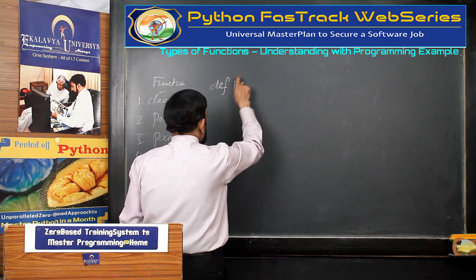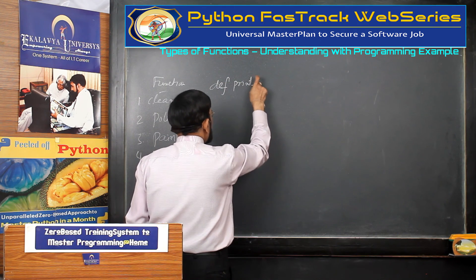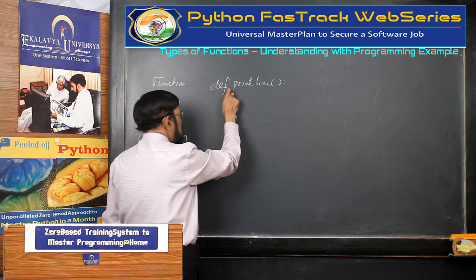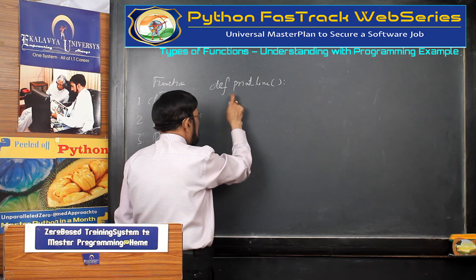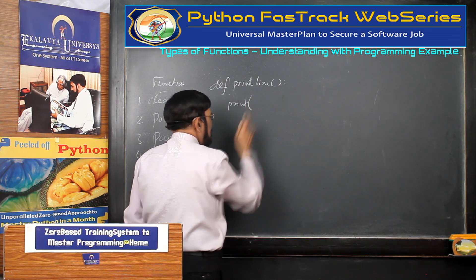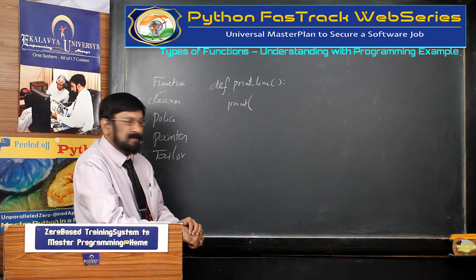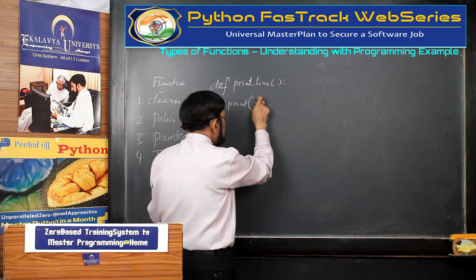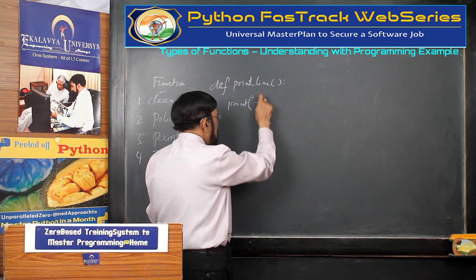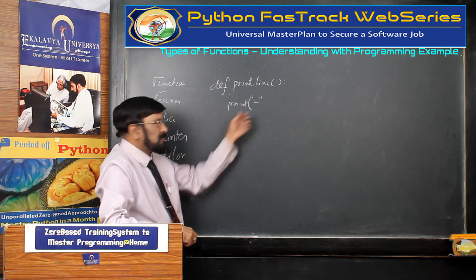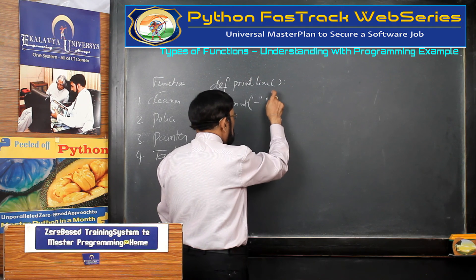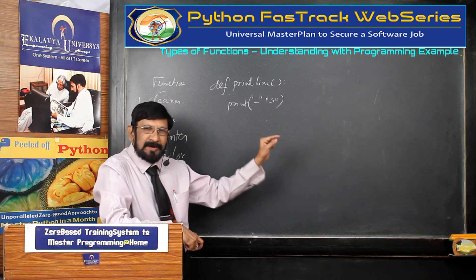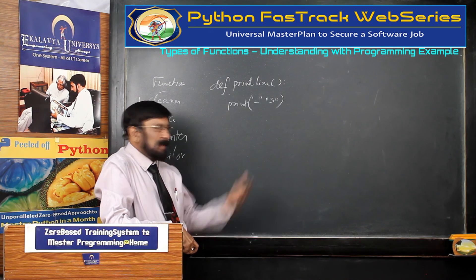For the first type, we take def print_line function. In this body, we write print. I am writing a line — a simple thing. In order to write a line, you decide which symbol you want to use, make it a string, then multiply it. Suppose you want 30 dashes — then just 30 — instead of writing a full line, you write it very flexibly, wherever you want.